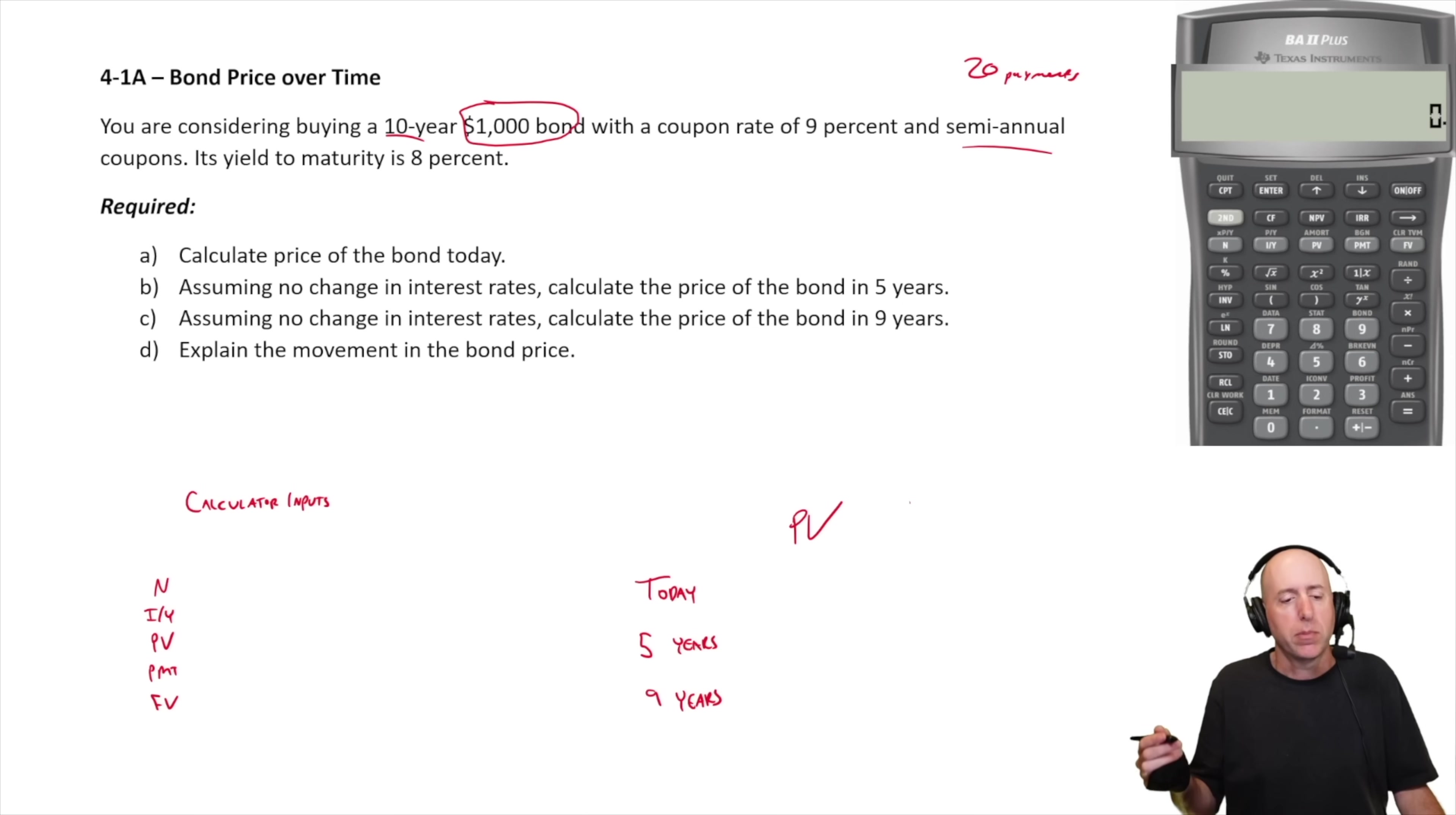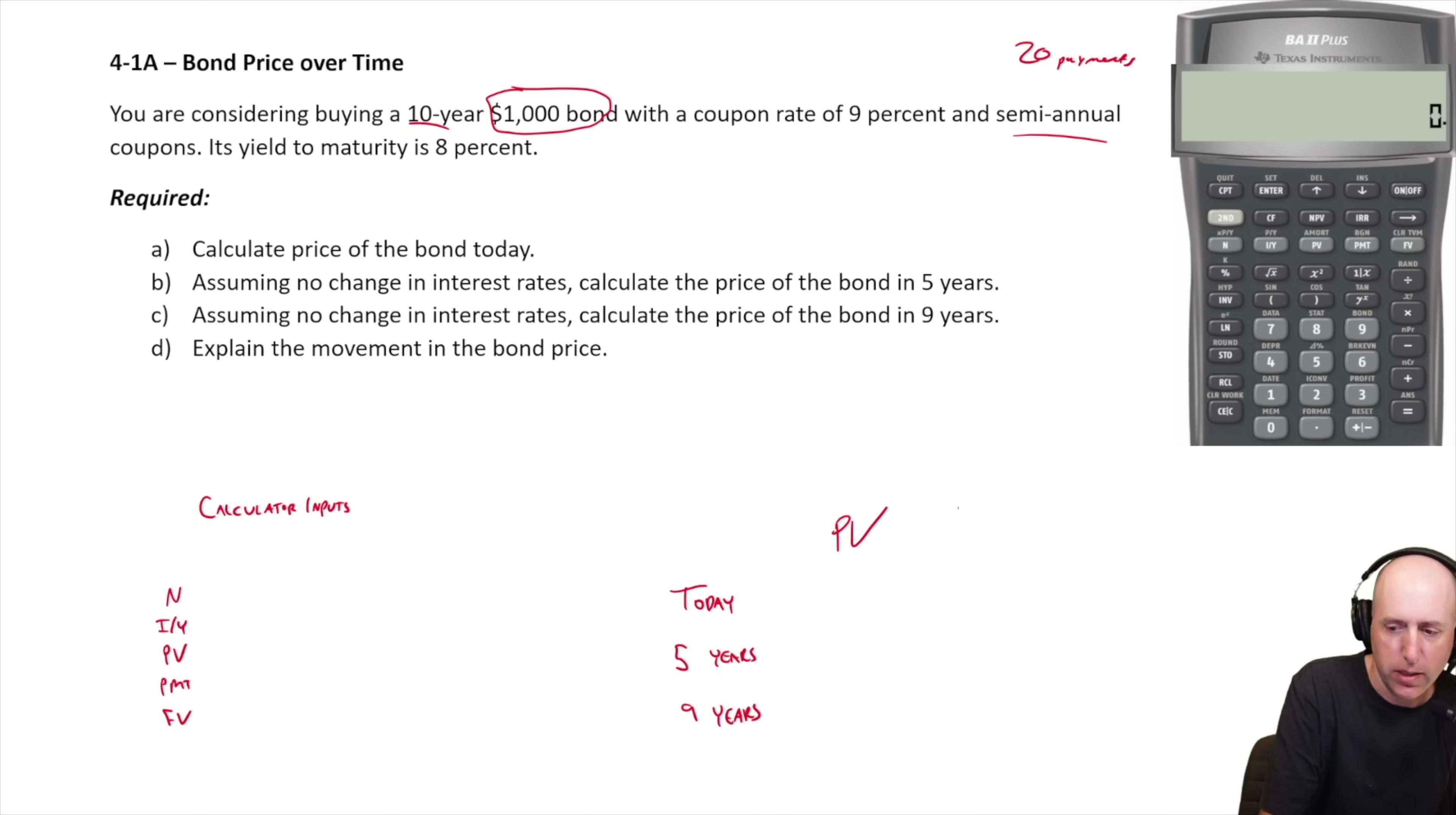Its yield to maturity is 8%. Calculate the price of the bond today. Here's what we're going to input into our calculator. The N is 20, right? There's 20 semi-annual payments, 20 periods.